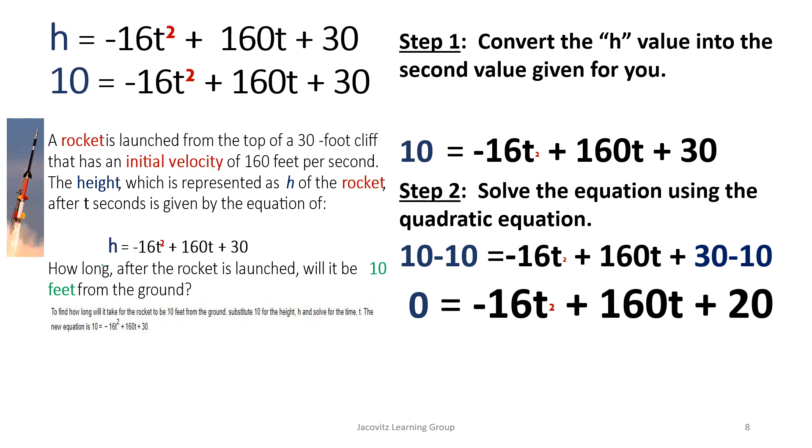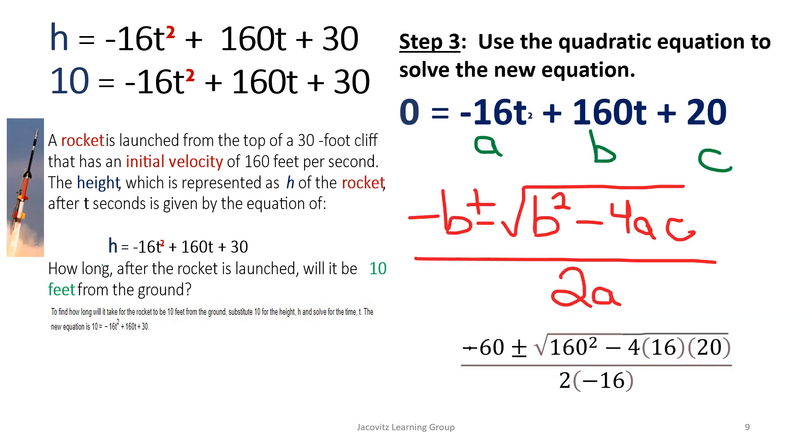This 10 that you see here is now going to replace your zero for your quadratic, but we're not done yet. You have your steps here, you convert your h. You have to take this 10 and subtract it. Its additive inverse has to go. That then brings the equation to 20, negative 16t squared plus 160t plus 20.